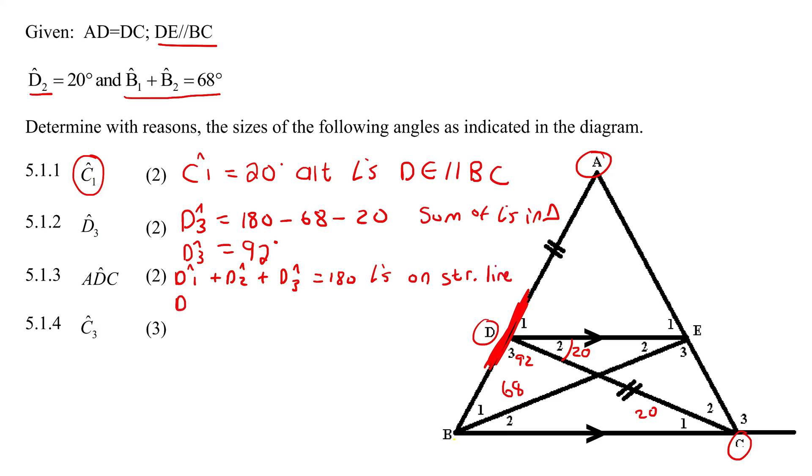So D1 we don't know, D2 is 20, D3 is 92. And so to work out D1, you would say 180 minus 20 minus 92. It's just like solving an equation. And if we work out D1, we would get 68 degrees.